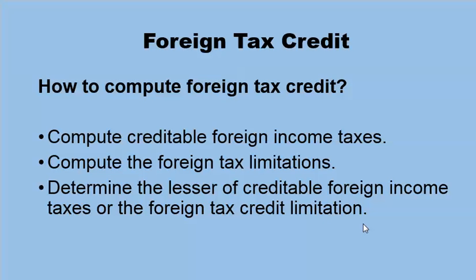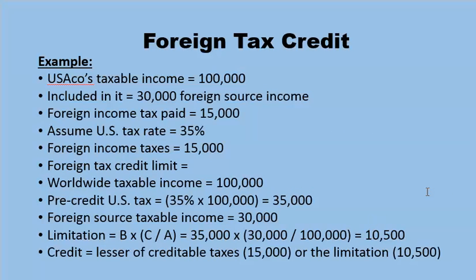Let's take an example. We have a USA corporation that has taxable income equal to $100,000. Included in this income is $30,000 of foreign source income. Foreign income tax paid is $15,000. Assume the US tax rate is 35%. Foreign income taxes are $15,000. How do we calculate the credit limit? We take worldwide tax...